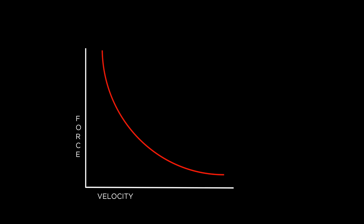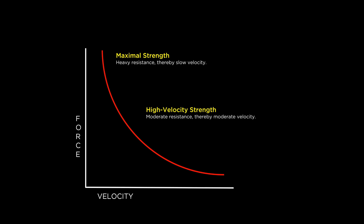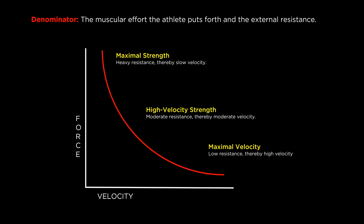Right here we have a force-velocity curve. It basically describes the relationship between force and velocity. Although there are many labels depending on who you ask, let's simplify it with the following: maximal strength, high velocity strength, and maximal velocity. The main denominator will be the muscular effort the athlete puts forth and the external resistance. Considering the effort is equal, it comes down to this: the heavier the weight, the slower the speed, and the lighter the weight, the faster the speed.